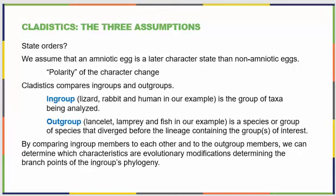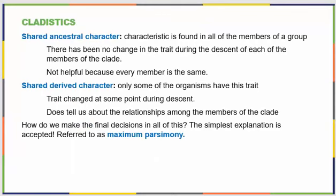In cladistics, we look a lot at in-groups and out-groups. An in-group is a group of taxa where everyone is being studied and analyzed together. Out-groups are all the species outside of that taxa — they diverged before whoever it is you are studying. By comparing in-group members to one another and out-group members to one another, we can look at what evolutionary modifications should be considered when examining speciation events. We can look at shared ancestral characters — found in everybody in your in-group — and shared derived characters, which are only seen in you and make you special.